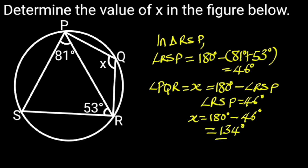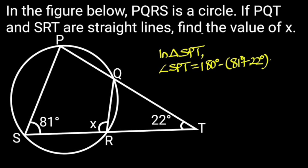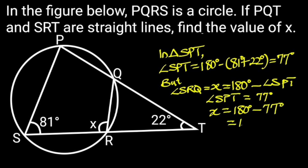Since angle RSP equals 46 degrees, hence X equals 180 degrees minus 46 degrees, which is 134 degrees. In the figure, PQRS is a circle. If PQT and SRT are straight lines, find the value of X. Solution: In triangle SPT, angle SPT equals 180 degrees minus (81 degrees plus 22 degrees), which is 77 degrees. Reason: Sum of angles in a triangle. Angle SRQ equals X, which is 180 degrees minus angle SPT. Reason: Opposite angles of cyclic quadrilateral. Since angle SPT equals 77 degrees, hence X equals 103 degrees.